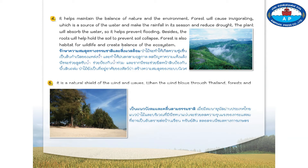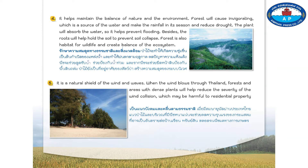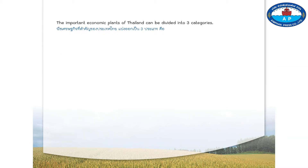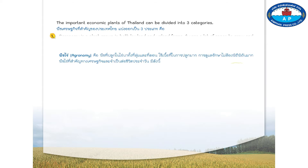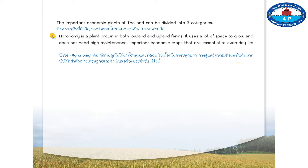Number five, it is a natural shield of wind and waves. When the wind blows, forests and areas with dense plants will help reduce the severity of the wind collision, which may be harmful to residential property and agricultural plants. The important economic plants of Thailand can be divided into three categories.